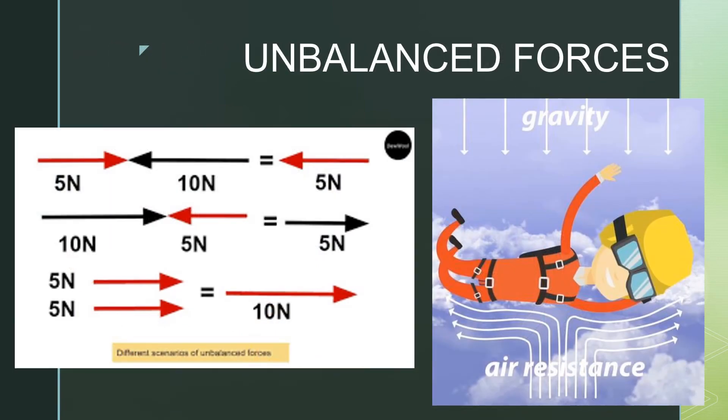Here are examples of unbalanced forces. In the first two sets of arrows, it shows us that if two forces are acting on an object with different values in opposite directions, the motion of the object can be determined by the greater force. So the direction